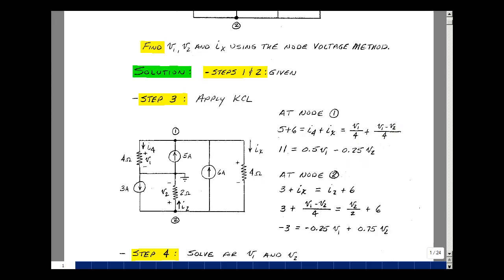Let's do the same thing on node 2. The current that enters is 3 amps, the current that enters is I sub x, and then the current that leaves is I2 and 6 amps. We said that I sub x was V1 minus V2 over 4, and then the current I2 is going to be this node voltage minus this node voltage, divided by 2, which is V2 minus 0, or just V2, divided by 2.